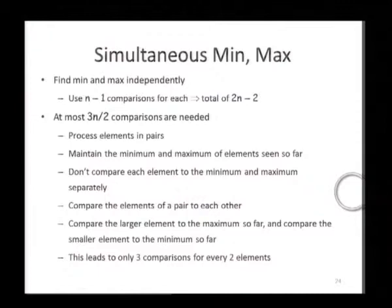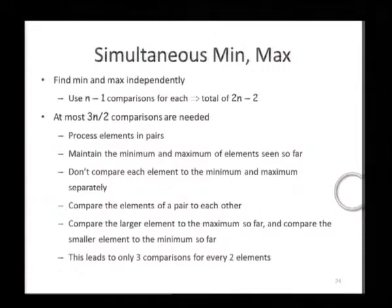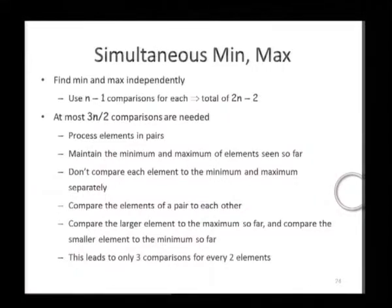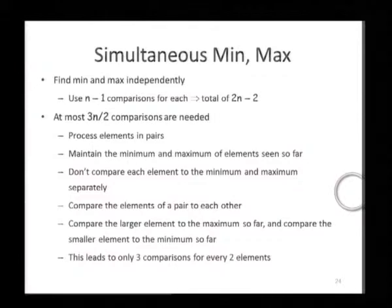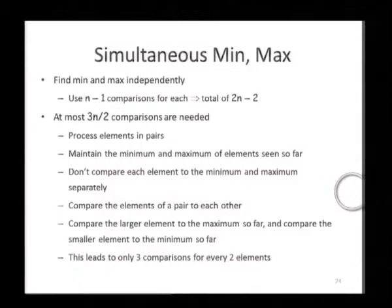Here is one way of doing it: use n minus 1 comparisons for each of them. That is, scan the elements from the first element to the last element, assume that the first element is both the minimum and the maximum, and compare the current minimum and the maximum in every iteration with the current element. This is two comparisons per element. There are n minus 1 elements that are compared against the minimum and maximum values, and therefore we perform 2n minus 2 comparisons.